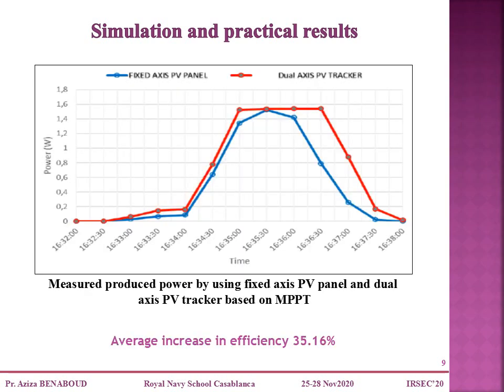In this slide, I show you the measured produced power by using a fixed-axis PV panel and a dual-axis PV tracker based on MPPT. In comparison to the usually fixed panel, which produced about 6 watts in total, the proposed solar tracker using the MPPT algorithm produced more than 8 watts. The average increase in efficiency is then 35%.